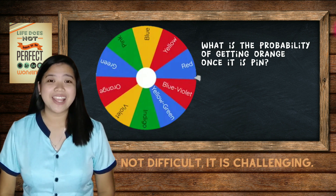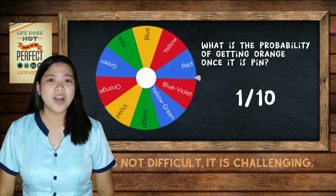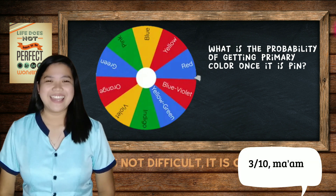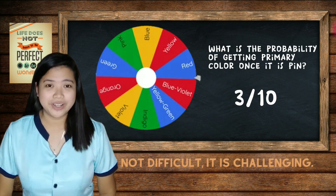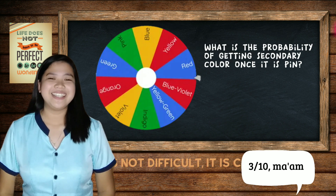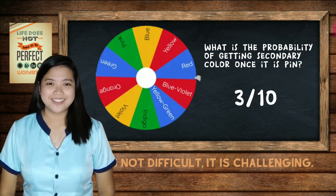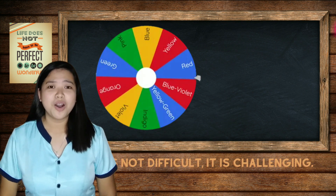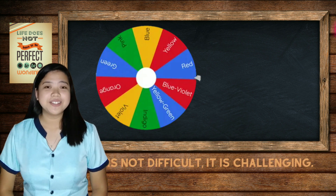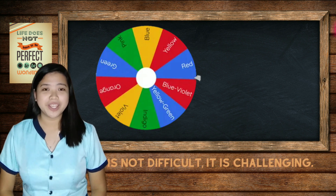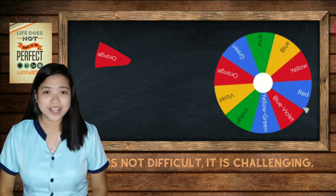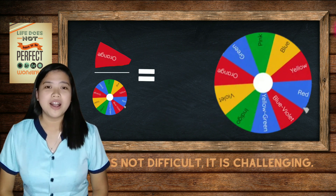That is correct — it is 1 over 10. How about the probability of getting a primary color? That is correct: 3 over 10. How about a secondary color? It is also 3 over 10. To find the probability of an event or object, we look for the ratio of the favorable outcomes to the total number of outcomes.